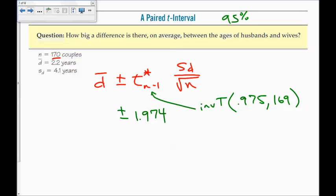Plus or minus my d bar is 2.2 years. That was the average difference times 4.1 divided by the square root of n, which is 170. So, 2.2 minus 1.974. And I get 1.579, comma, 2.82. I'm just going to round this up to 2.8.